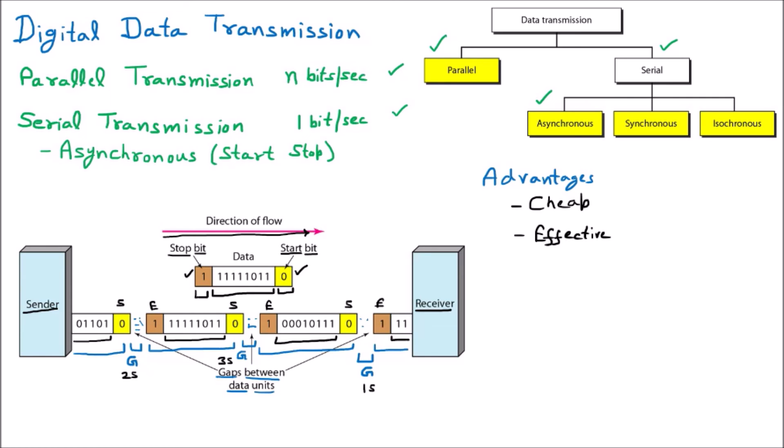Now the disadvantages of asynchronous communication. The first disadvantage is that it is slow. Anything that is cheap is obviously slow, because cost always comes with speed — higher speed requires more cost, so lower cost means lower speed. It is very slow: I send you 'hello,' then wait, then send 'how are you,' then wait again for a variable time — that is slow communication.